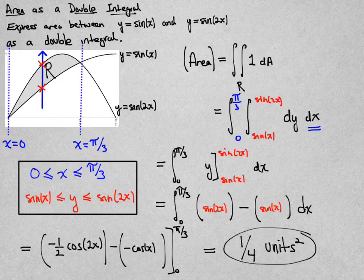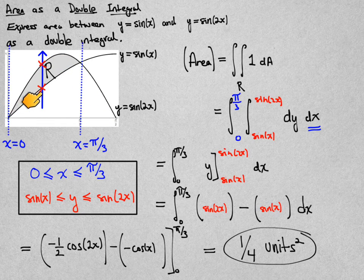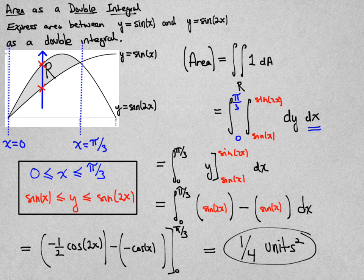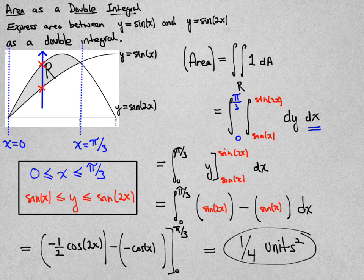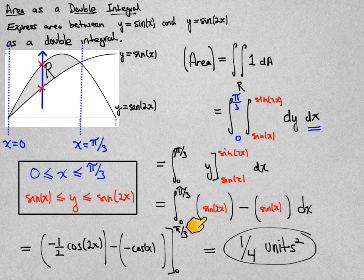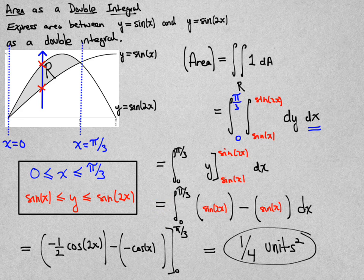What would be worth discussing here is that if you were in an earlier calculus course and you just wanted to find the area between two curves, you would just integrate the difference of these two functions with respect to one variable, in this case x, and that's exactly what appears here after the first integration. So I've got the difference of the two curves and I'm integrating from x = 0 to π/3, and that's probably the first way you learned to find areas between two curves. This is a more general situation than what you've previously learned in an earlier calculus course.